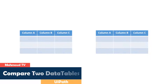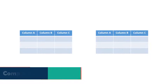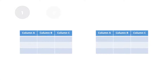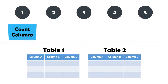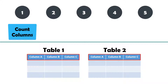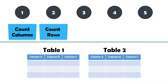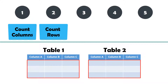In order for two data tables to be exactly the same, five requirements must be met. The first is that the number of columns in both tables must be the same — for example here we have three columns in each table. The number of rows must also be the same in both tables — for example here we have three rows in each table.